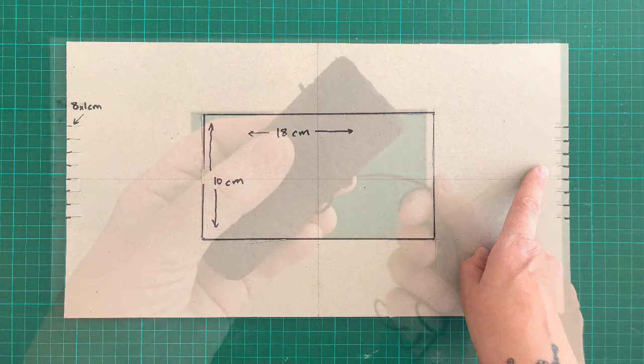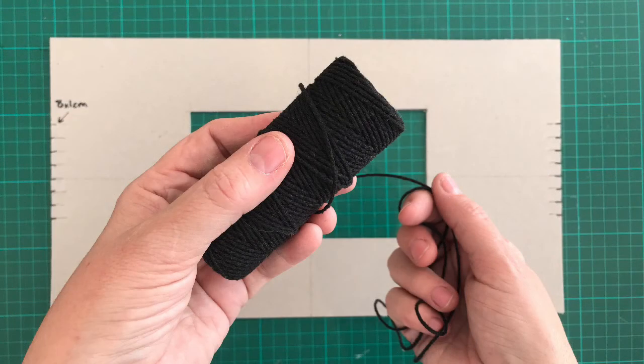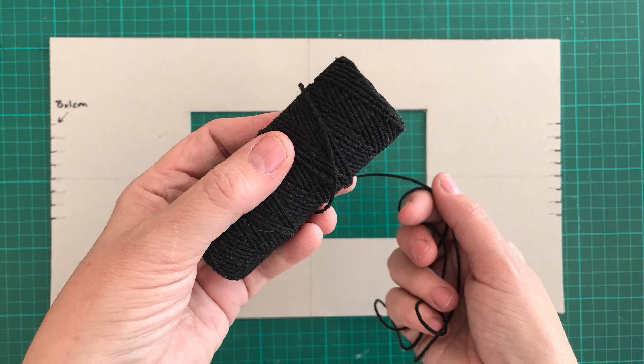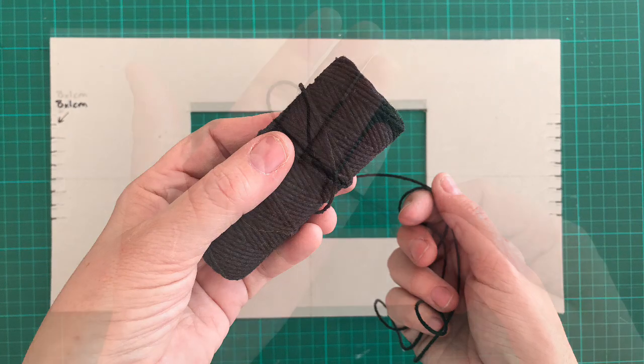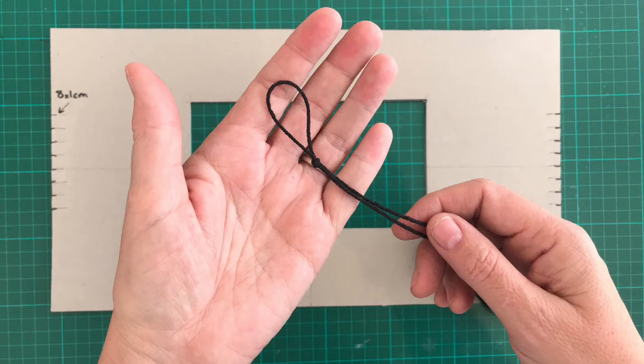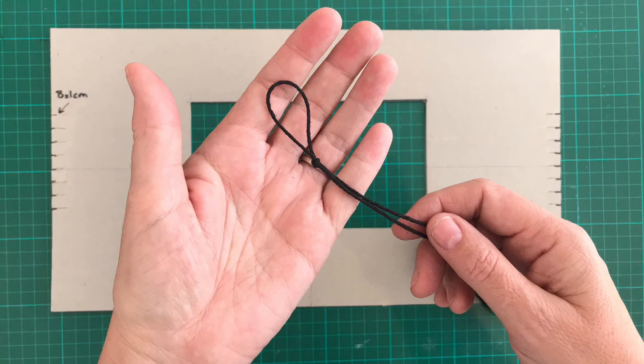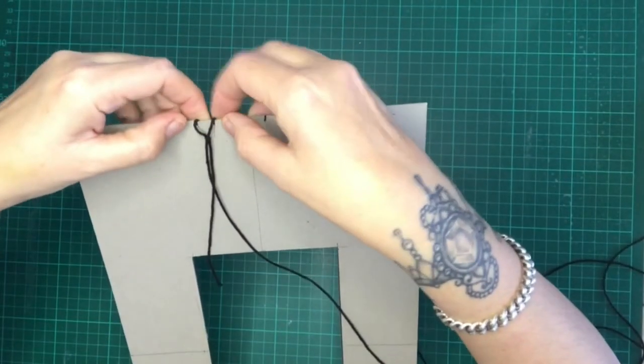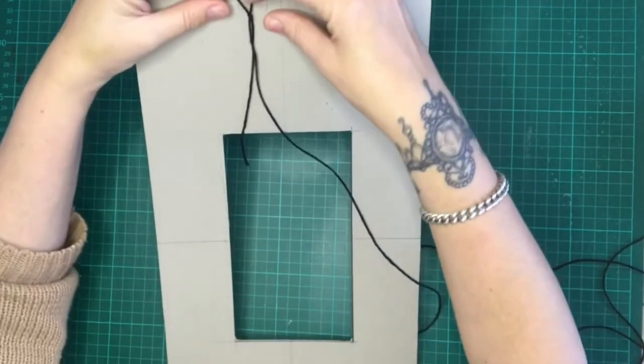Now we're ready to string up the loom. I'm using a smooth string-like thread for this part. We're going to be creating what's called the warp threads. Make a loop knot in the end of the string. We're going to take this and put it into the very first notch on one end.